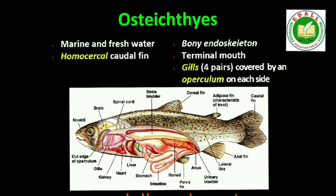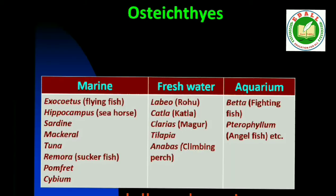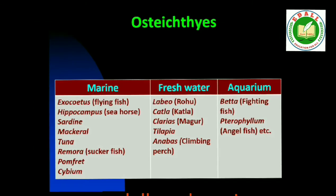Third is Class Osteichthyes. It includes both marine and freshwater fishes with bony endoskeleton. Their body is streamlined. Mouth is mostly terminal. They have four pairs of gills which are covered by an operculum on each side. Skin is covered with cycloid or ctenoid scales. Air bladder is present which regulates buoyancy. Heart is two-chambered, one auricle and one ventricle. They are cold-blooded animals. Sexes are separate. Fertilization is usually external. They are mostly oviparous and development is direct. Marine examples: Exocoetus (flying fish), Hippocampus (sea horse). Freshwater: Labeo (rohu), Catla, Clarias (magur). Aquarium: Betta (fighting fish), Pterophyllum (angelfish).